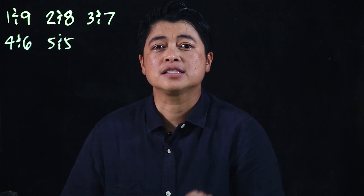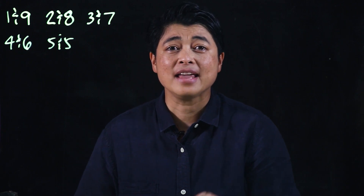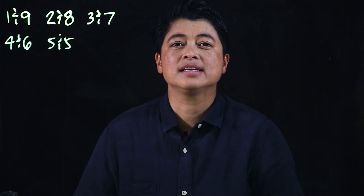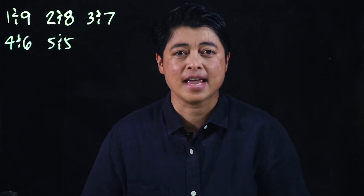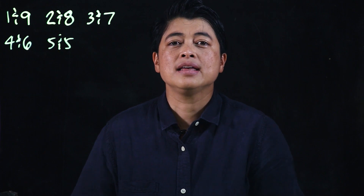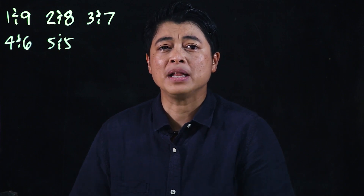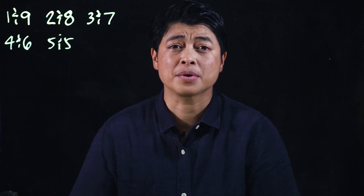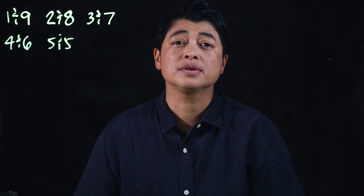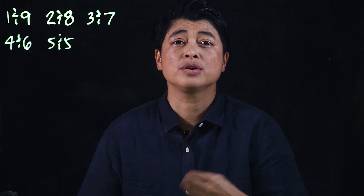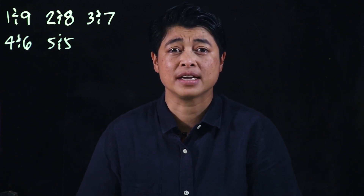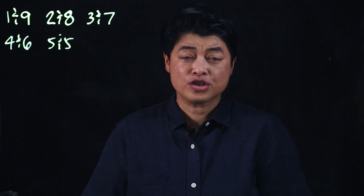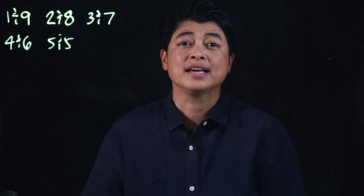But if it says subtract a from b, then it's going to be b minus a. In the pupil book there's not much of this, but when we get to the workbook you will see that it's important that you keep reminding your kids of this. So on page 49...